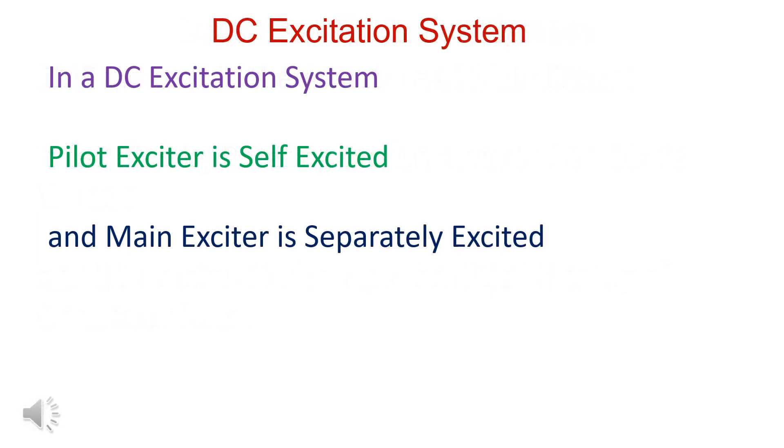In DC excitation system, pilot exciter is self-excited or separately excited. Pilot exciter is self-excited. DC produced by the pilot exciter is fed into main exciter.